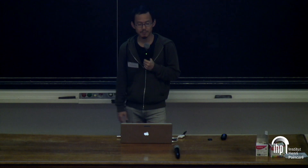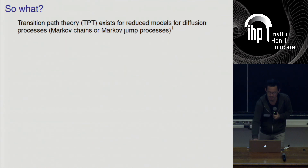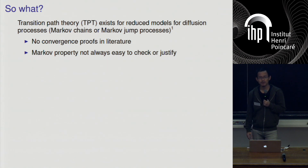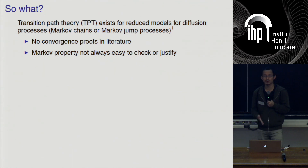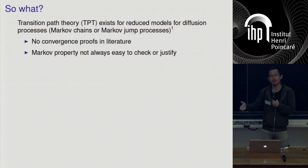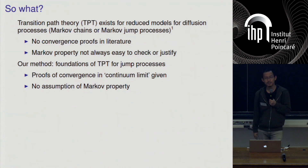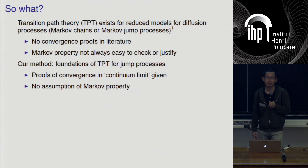TPT exists for reduced models of diffusion processes — Markov chains or Markov jump processes supposed to mimic diffusion behavior. However, to the best of our knowledge, there are no convergence proofs in the sense of continuum limits in the literature. The Markov property is not always easy to check or justify — it's typically based on heuristics of choosing your observation time window large enough that your system forgets where it was before. Our method provides the first foundations of TPT for jump processes where we can actually prove convergence in a continuum limit, and we don't assume Markovianity at all.